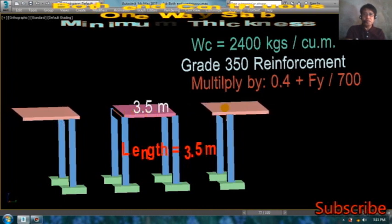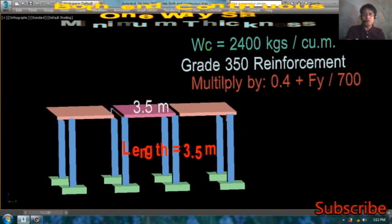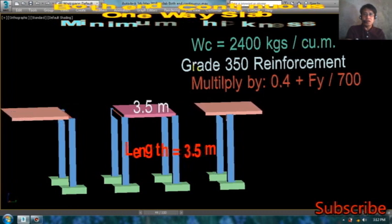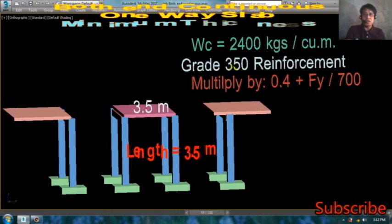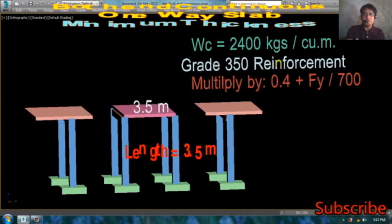Pag-uusapan din po natin kung ano po yung mga given natin. Kung yung weight of concrete natin is 2,400 kilograms per cubic meter at yung grade nung reinforcement natin is 350, hindi na po kagaya ng grade na ginamit natin dati na 415.